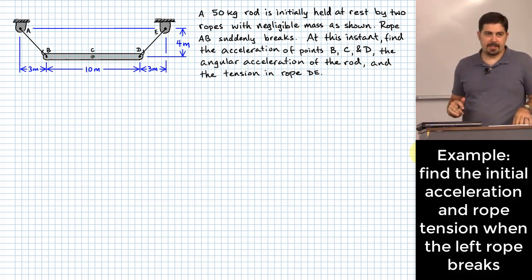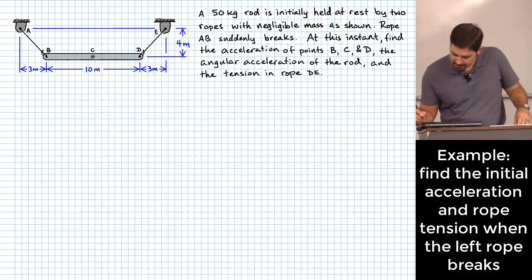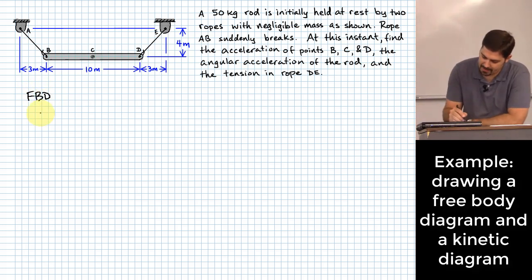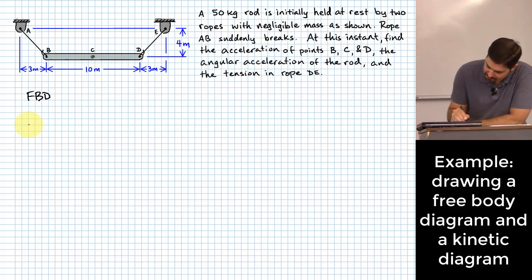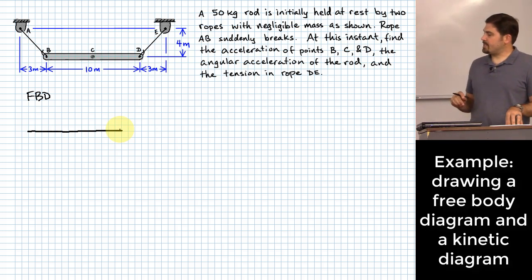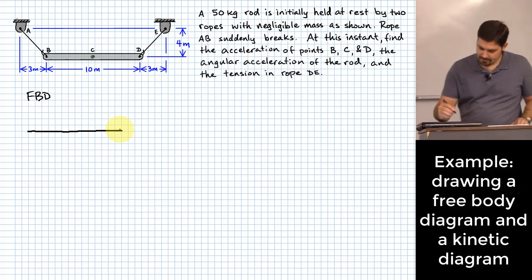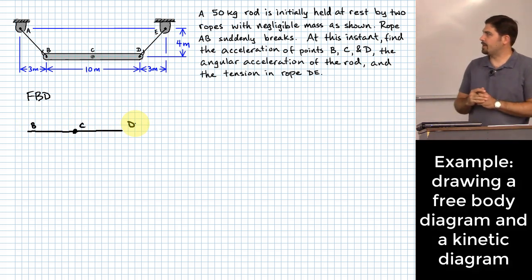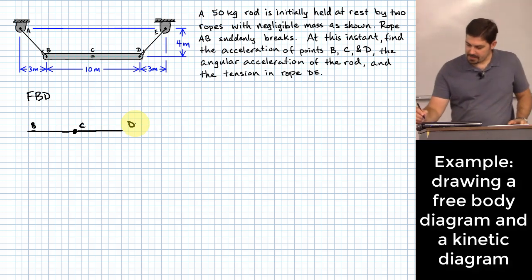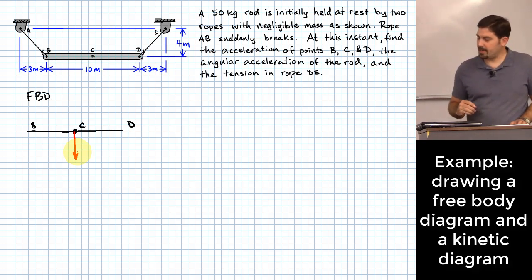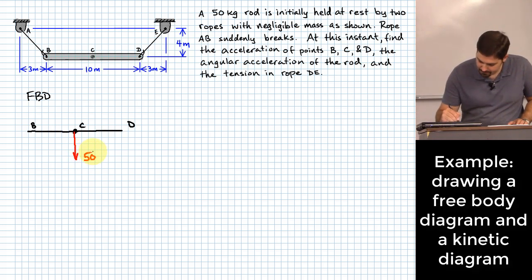A good place to start is a free body diagram. For the free body diagram, we don't need to make it realistic — we'll just represent rod BCD as a line. The forces applied to rod BCD include the weight, which is 50 kilograms times 9.81 m/s². We're looking at the instant in time when rope AB suddenly breaks, so the piece has had no time to move and we can assume it stays horizontal.